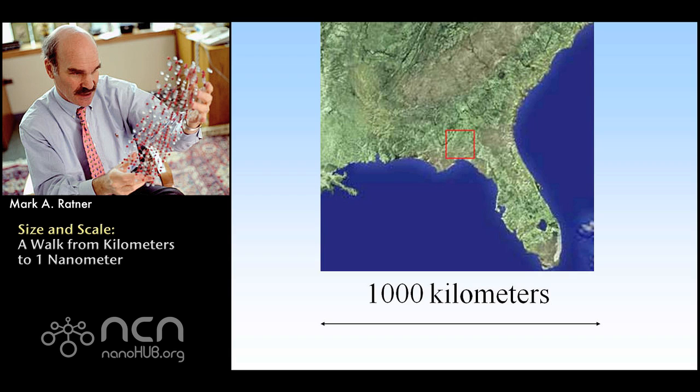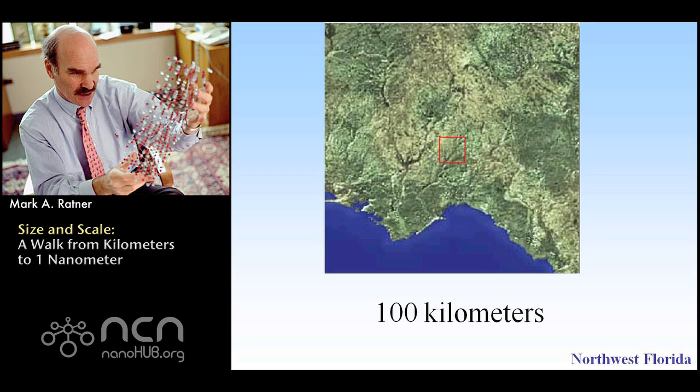We'll start with the southeastern United States, the state of Florida. The little red thing in the middle is going to be expanded on the next picture by a factor of 10. So the little red one that fills up the center is now the entire picture, and we've gone from a thousand kilometers to a hundred kilometers across — 60 miles — in northwest Florida inside that little red box.